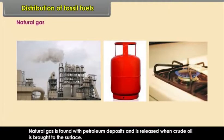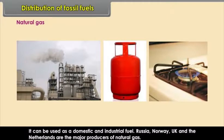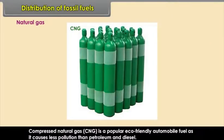Natural gas is found with petroleum deposits and is released when crude oil is brought to the surface. It can be used as a domestic and industrial fuel. Russia, Norway, UK and the Netherlands are the major producers of natural gas. Compressed natural gas (CNG) is a popular eco-friendly automobile fuel as it causes less pollution than petroleum and diesel.